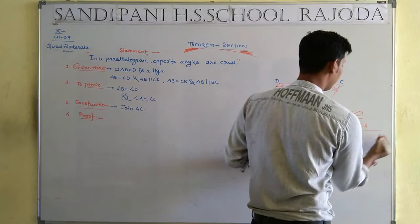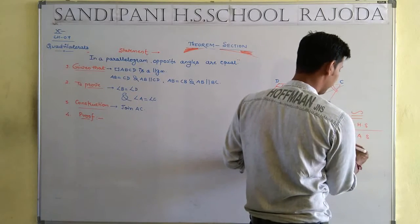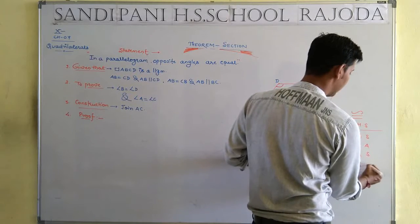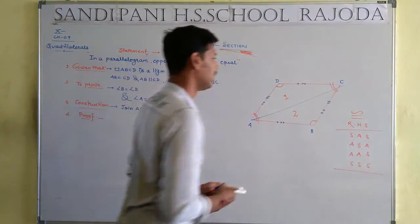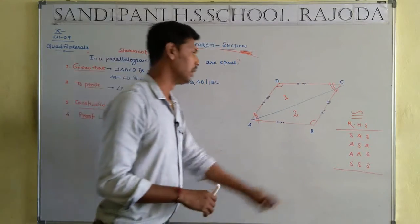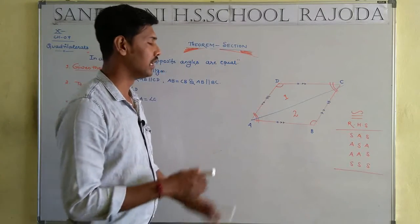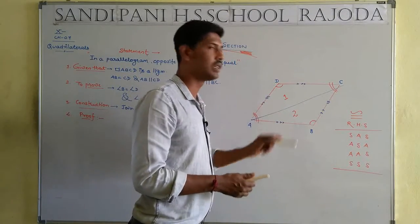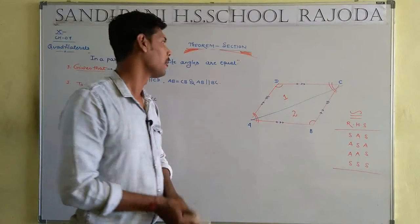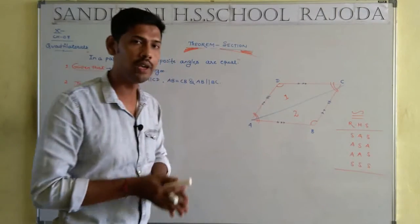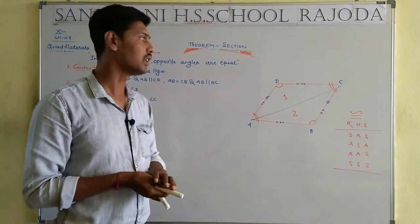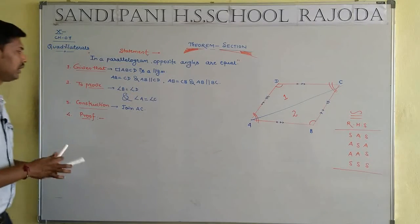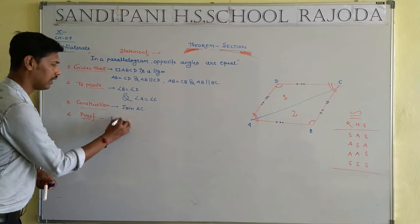We need to satisfy one of these properties — Side-Angle-Side, Angle-Side-Angle, Angle-Angle-Side, or Side-Side-Side — to say both triangles are congruent. When two triangles are congruent, every corresponding element is equal, so we can say angle B equals angle D.